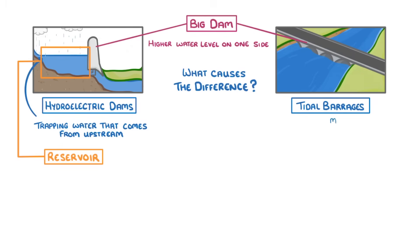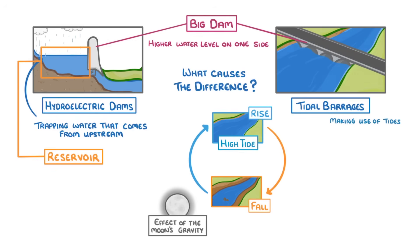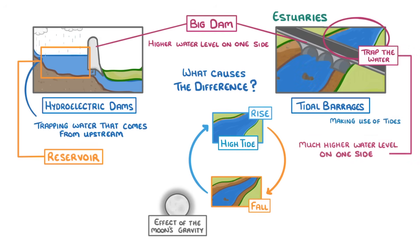For tidal barrages, we're making use of tides, which are the cyclic rise and fall of sea levels, due mainly to the effect of the moon's gravity. Twice each day we get a high tide, where the level of water in the ocean rises. This also happens in estuaries, which are the points where rivers meet the ocean. By placing tidal barrages, which are just big dams, in these estuaries, we can trap the water as the tide comes in, so that when the tide goes back out, we're left with a much higher water level on one side of the dam than the other.